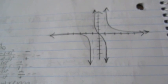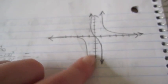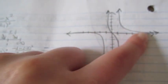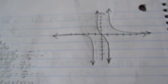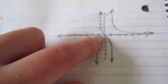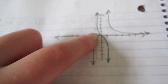The graph shows vertical asymptotes at x = −1 and x = 1, a horizontal asymptote at y = 0, and the x-intercept, y-intercept, and point of inflection all at (0, 0).